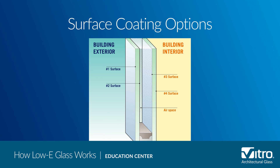In an insulated glass unit, low-e coatings can be applied to the various surfaces depending on the type of coating. The first surface faces outdoors and never has a solar control or passive low-e coating, as solar control low-e coatings are typically MSVD soft coats not durable enough for exposure to outside elements. The second and third surfaces face each other inside the IGU, separated by an airspace and insulated spacer — most MSVD solar control and pyrolytic passive low-e coatings are applied to these surfaces. The fourth surface faces directly indoors, and some pyrolytic hard coats can be applied there if they are durable enough to withstand exposure to interior elements.